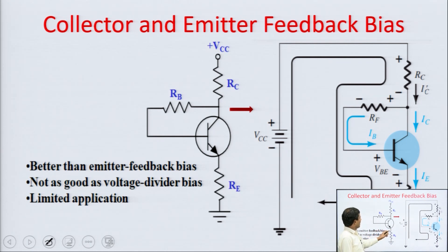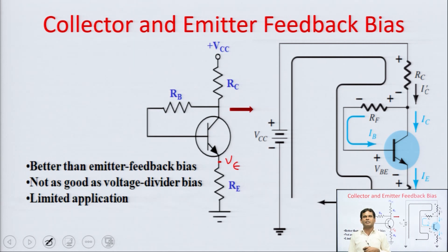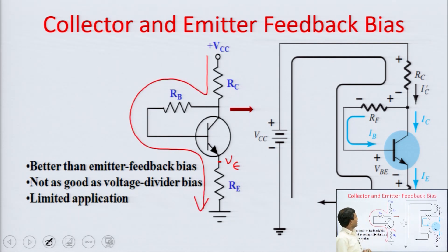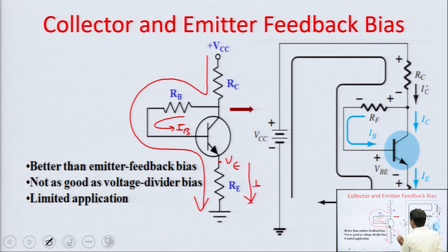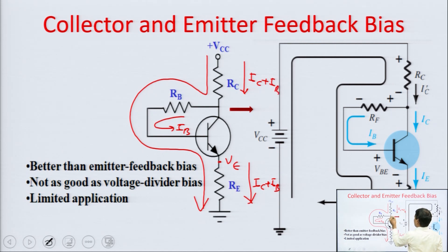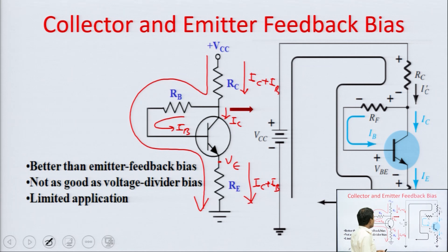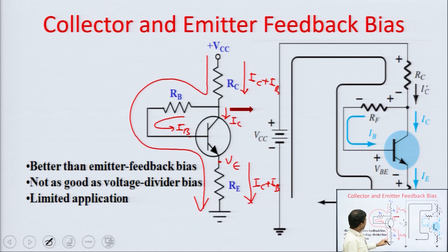Now for emitter feedback bias: previously the emitter was grounded, but now we connect a resistance RE at the emitter. The current distribution is: base current is IB, and RC carries IC plus IB. Writing the input KVL equation: VCC minus (IC plus IB)·RC minus IB·RB minus VBE minus (IC plus IB)·RE equals zero. This is equation 1: VCC minus (IC plus IB)·(RC plus RE) minus IB·RB minus VBE equals zero.